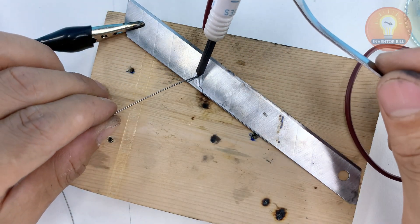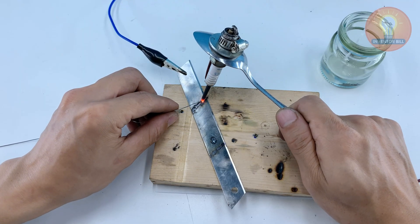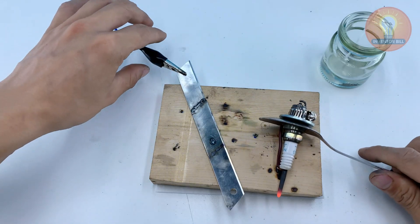After it cools, the two blades hold tight and you can flex them without the joint breaking. It's a simple way to repair thin metal parts when you don't have a real welding rig at home.